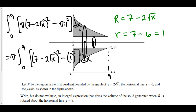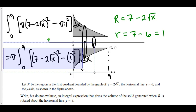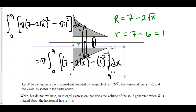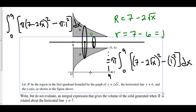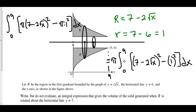This right here is the answer: pi times the integral from 0 to 9 of big R, which is (7 minus 2 root x) squared, minus little r, which is (7 minus 6) squared — that is 1 squared — dx.